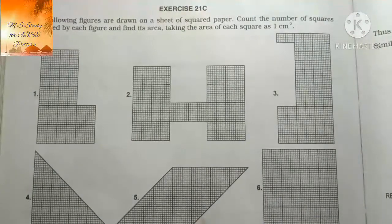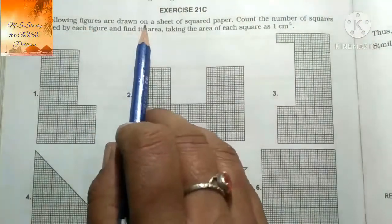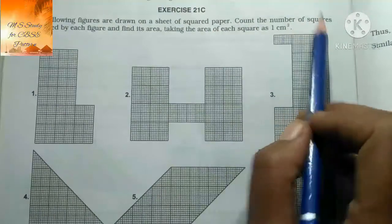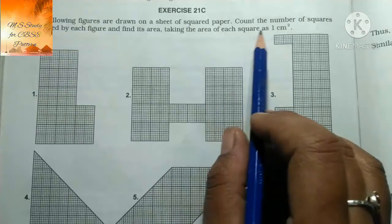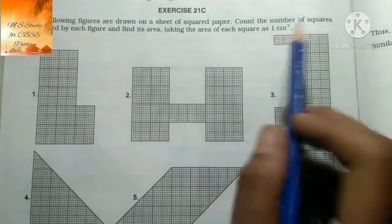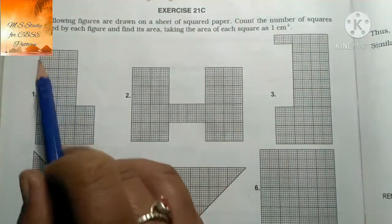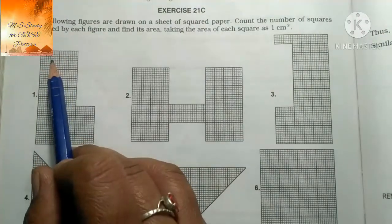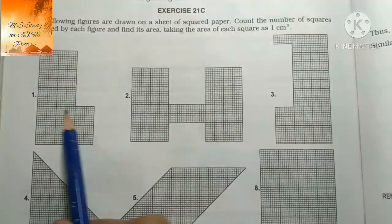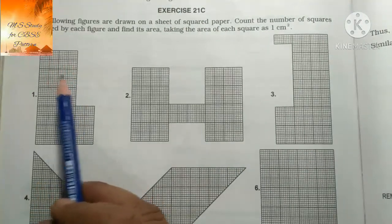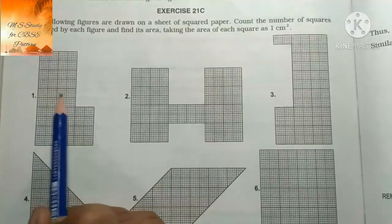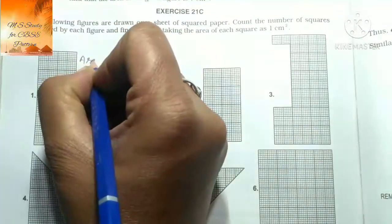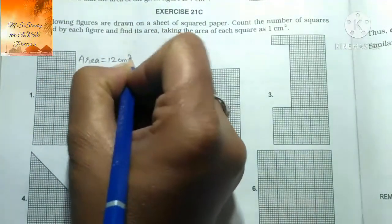Exercise 21C: The following figures are drawn on a sheet of square paper. Count the number of squares enclosed by each figure and find its area, taking the area of each square as 1 cm². इसमें सारे के सारे complete squares हैं यानि कि ये M हैं। Count करने पर 1 से 12 तक - area equals to 12 cm²।